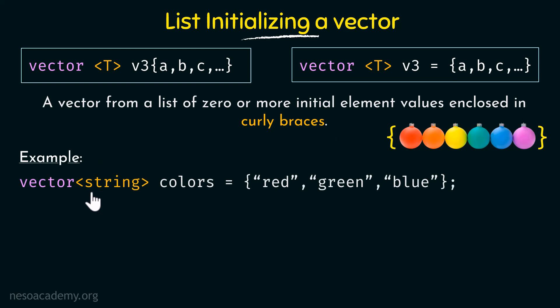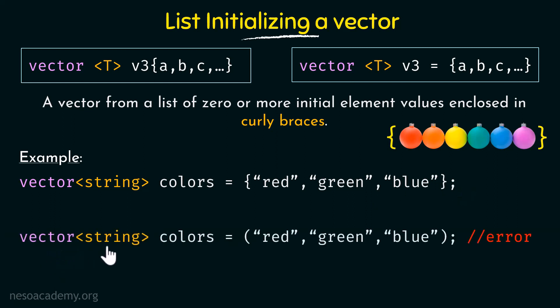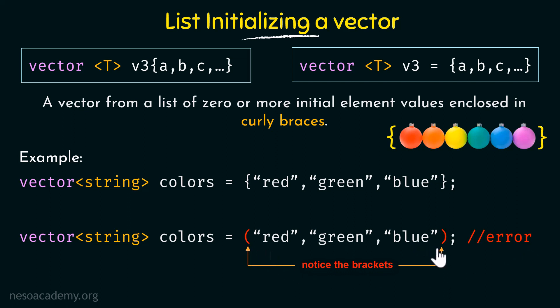Here we declare a vector of type string called colors and say it is equal to "red", "green", and "blue" enclosed within curly braces. Since they are strings each element is enclosed in double quotes and separated by commas. In a second example that looks similar but uses parentheses instead of curly braces — that would throw an error. Be very careful with the kind of brackets used when list initializing a vector.